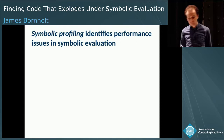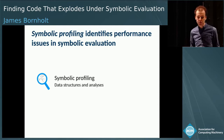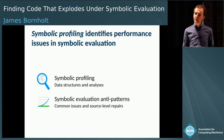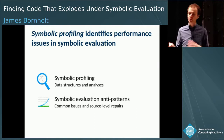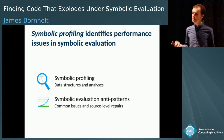Our solution is a new technique that we call symbolic profiling. A symbolic profiler pinpoints scalability bottlenecks in an automated reasoning tool. It does this by constructing two new data structures that summarize symbolic evaluation and then analyzing those data structures to find bottlenecks. Once you've found a bottleneck, repairs can often be made at the program level rather than hacking Rosette or Sketch. To help with that, we've identified a catalog of anti-patterns — things that often go wrong in these kinds of tools.